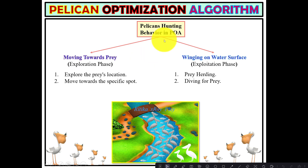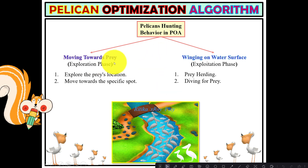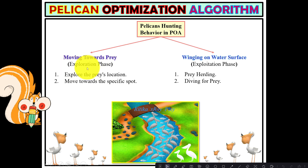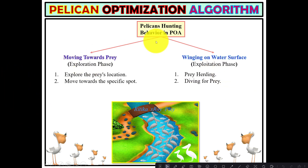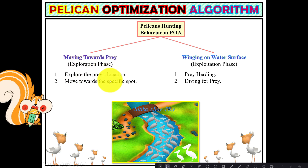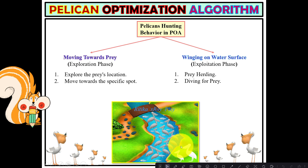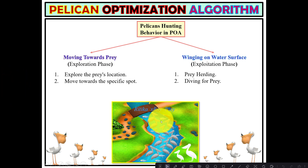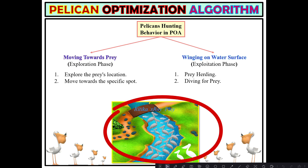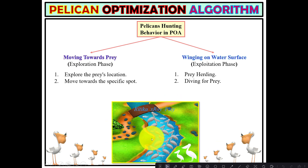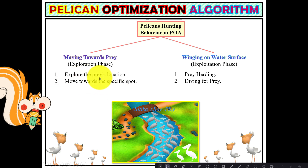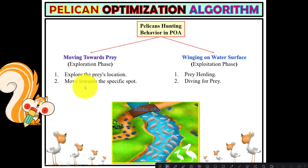In the Pelican Optimization Algorithm, different mathematical models are used to represent the pelicans' hunting behavior for exploration and exploitation. In the exploration phase, pelicans move towards the prey — they explore the prey location and move towards a specific spot. Pelicans use their keen sight to spot schools of fish near the water surface, then work together to herd fish into tight groups.